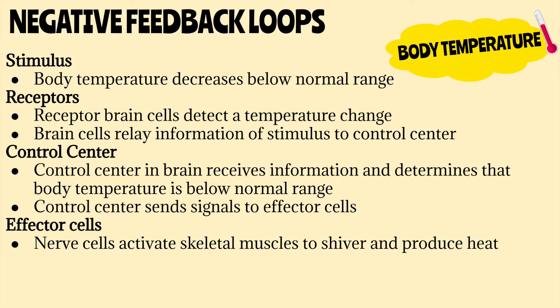Let's go over another example of a negative feedback loop. Say you get cold and your body temperature begins to drop. This stimulus will be detected by the cells in your brain, which would be the control center. The control center will then compare your body temperature to its set point and determine that your temperature is out of its normal range. The brain cells or control center will then activate other nerve cells to send signals to your skeletal muscles. The skeletal muscles in this case will be the effector. The effector will cause you to shiver to increase body heat. As a result, your temperature will begin to rise until it returns back to its normal homeostatic range. Afterwards, the stimulus ends and the control center will stop sending signals to the effector.